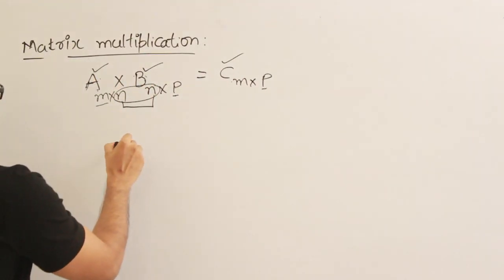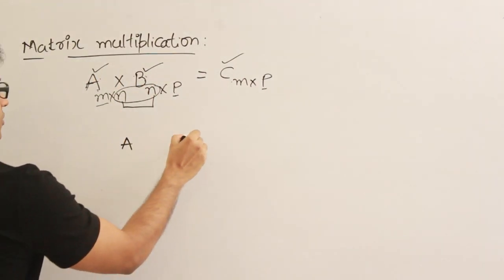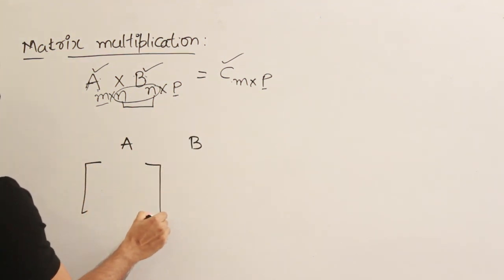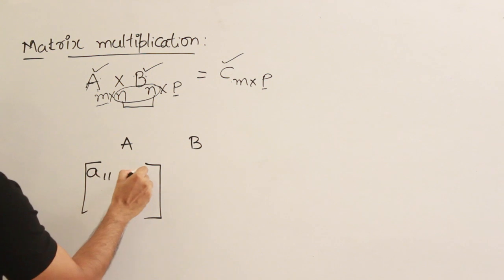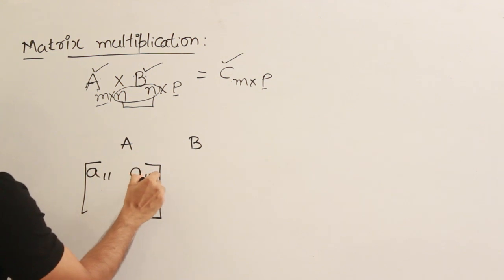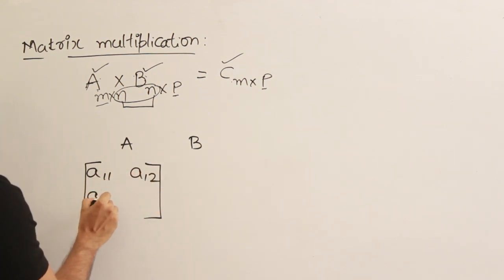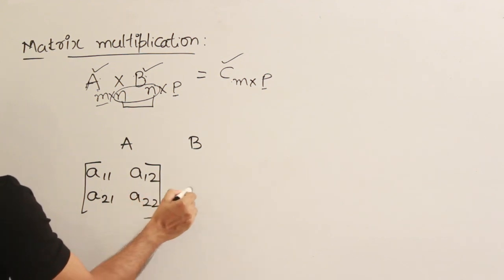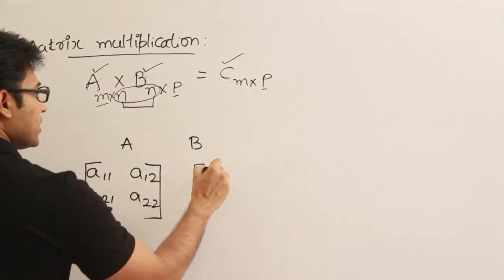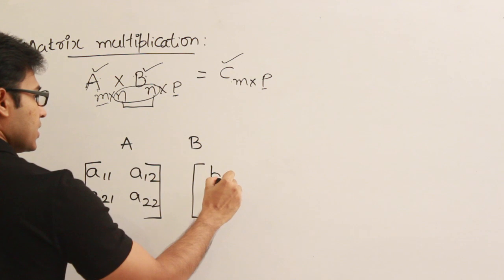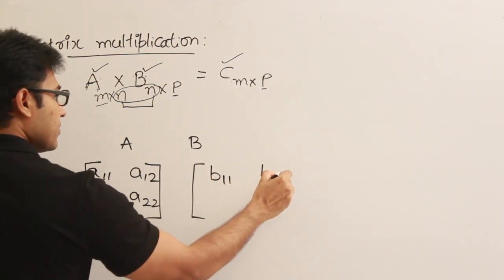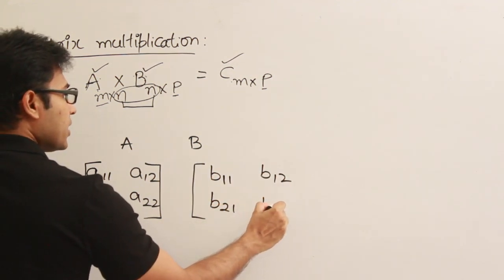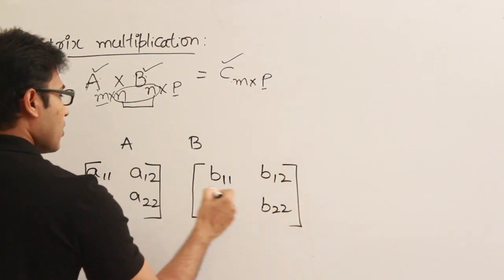Let us take a small example. Let A and B be two 2 by 2 matrices. So A has elements A11, A12, A21, A22. Similarly, let B be a 2 by 2 matrix with elements B11, B12, B21, B22.